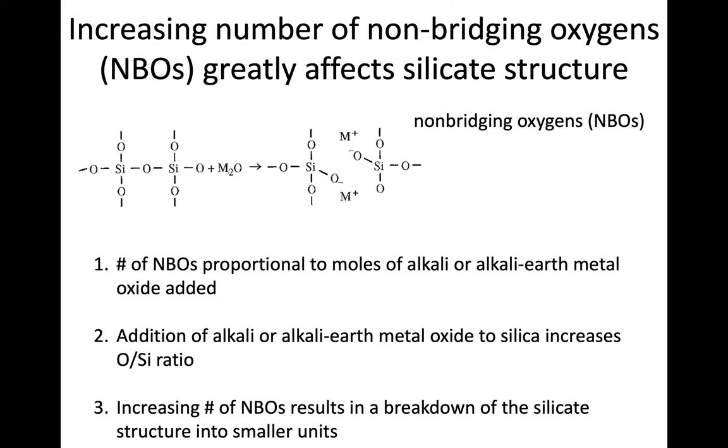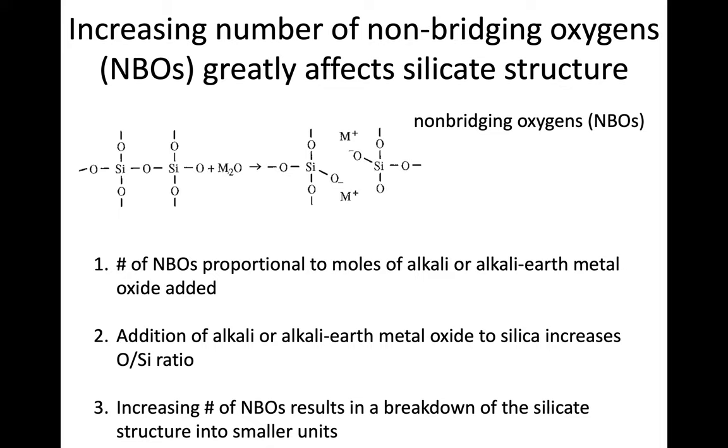We can increase the number of non-bridging oxygens by several factors. We can increase the amount of alkali or alkali-earth metal oxides that we add. This addition will break up bonds between the tetrahedra and give us more non-bridging oxygens or NBOs. This has the effect of increasing the oxygen to silicon ratio, so instead of talking about the relative number of non-bridging oxygens, we talk about having more oxygens relative to silicons.